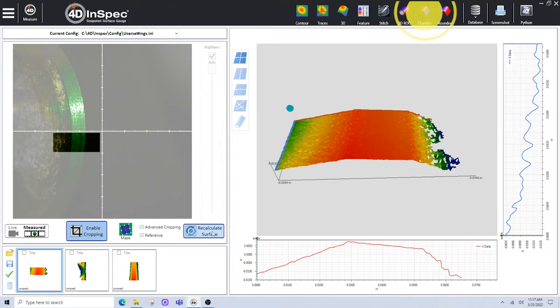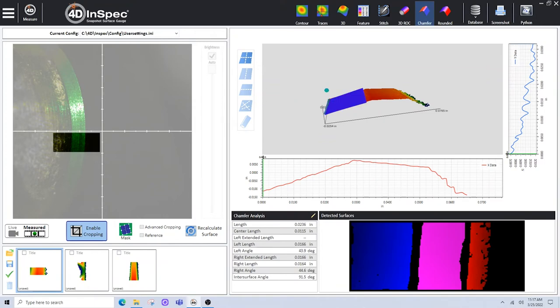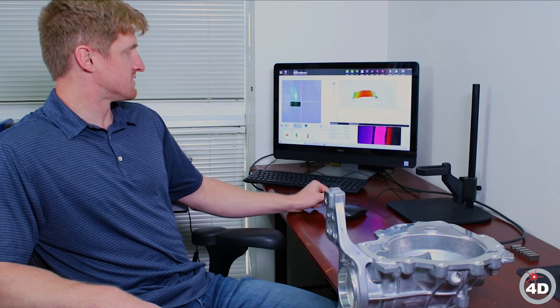Once I have that, I'll put this into the chamfer analysis just as I did with the standard. The software will detect all the data points on the left side, chamfer face, and the right side just as I did with the standard.